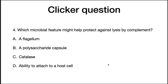We end this lecture with a quick question: which microbial feature might help protect against lysis by complement? The answer is a polysaccharide capsule, because it can hide the membrane — and anything that antibodies might recognize or any of the other systems — from being detected by complement. That's it for this lecture.